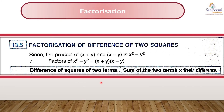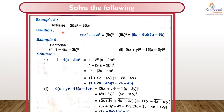Next we have factorization of the difference of two squares. For example, x² - y² — we know that (x + y)(x - y) equals x² - y². So the difference of the squares of two terms equals the sum of the two terms multiplied by their difference. For example, 25a² - 36b²: the square root of 25 is 5, so we write (5a)², and 36b² = (6b)². So the factors are (5a + 6b) and (5a - 6b).